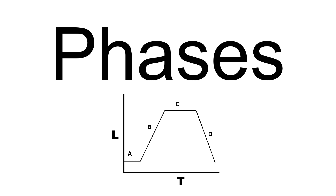The log phase, sometimes called the logarithmic phase or the exponential phase, is a period characterized by cell doubling. The number of new bacteria appearing per unit time is proportional to the present population. If growth is not limited, doubling will continue at a constant rate so both the number of cells and the rate of population increase doubles with each consecutive time period. For this type of exponential growth, plotting the natural logarithm of cell number against time produces a straight line. The slope of this line is the specific growth rate of the organism, which is a measure of the number of divisions per cell per unit time.